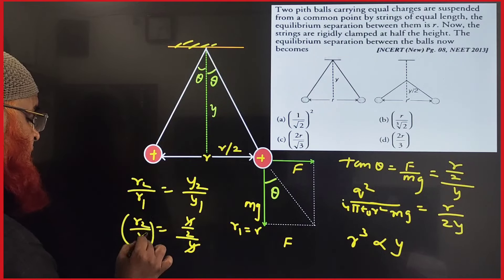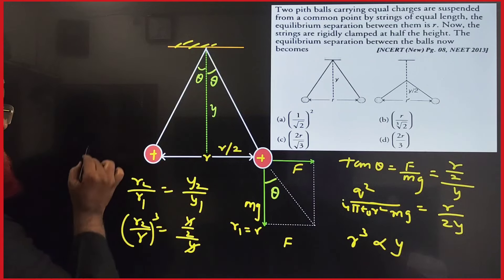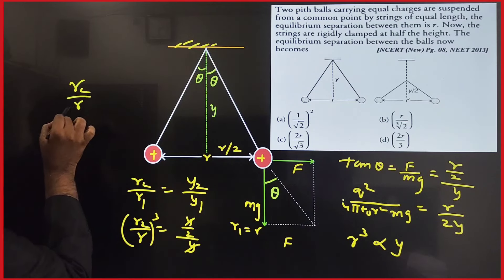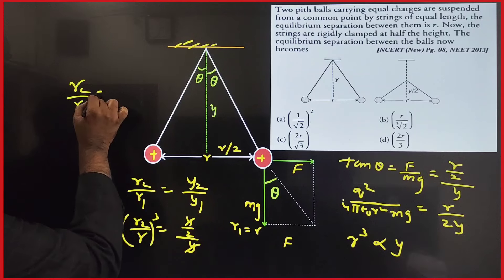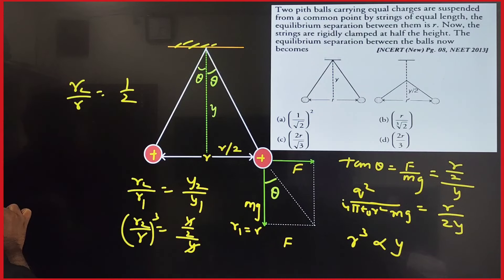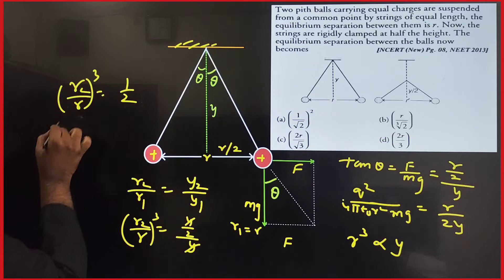So R₂ by R, because R₁ is taken as R here, so it's going to be 1 by 2 whole cube. Therefore R₂, this cube, if you send it, becomes cube root of 2 divided by R.